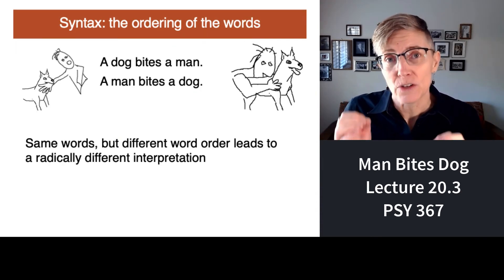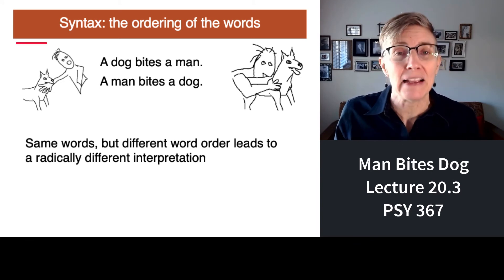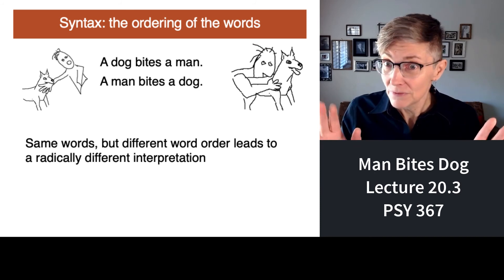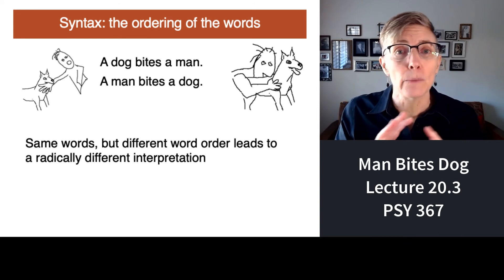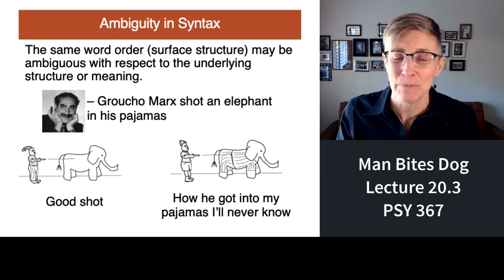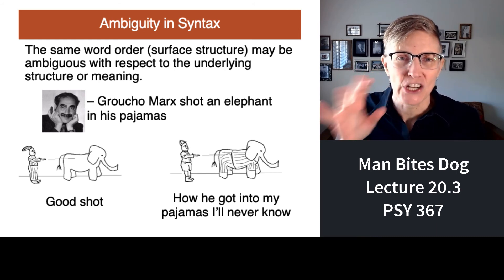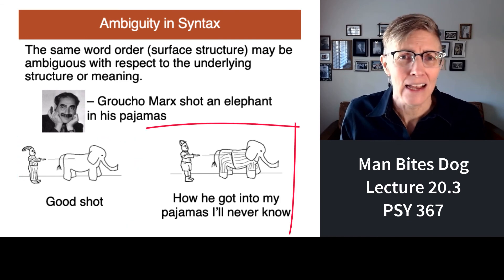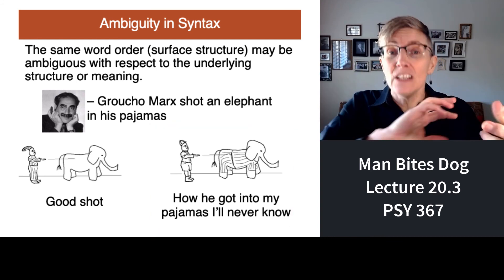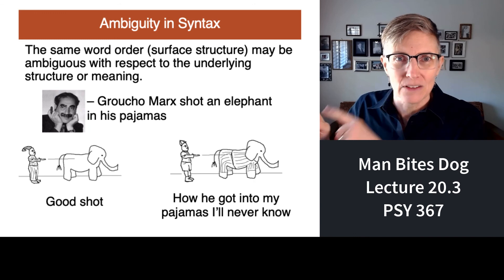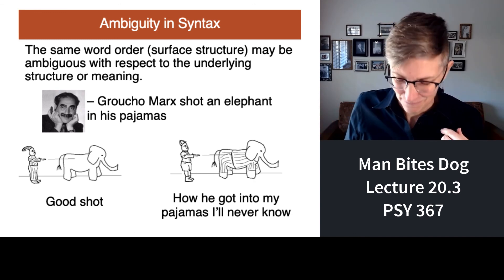Word order helps us out some. If I say 'a dog bites a man,' you think of one thing. If I say 'a man bites a dog,' you think of another. Same words, exact same words, different order — entirely different meanings. But syntax doesn't always clarify things, and comics are wonderful at pointing this out. Groucho Marx always had a cigar and had this famous line: 'This morning I shot an elephant in my pajamas.' You picture Groucho in pajamas shooting an elephant. He waits a beat, then says, 'How he got in my pajamas, I'll never know.' That second sentence entirely changes your understanding of the first — now it's the elephant wearing the pajamas. Ambiguous. That's what makes language fun.